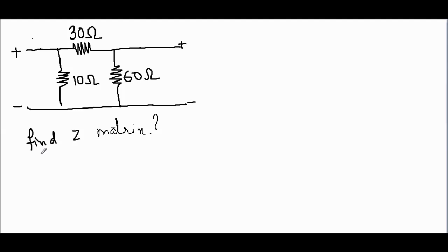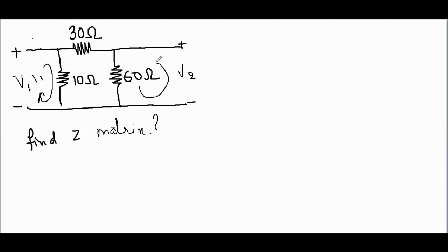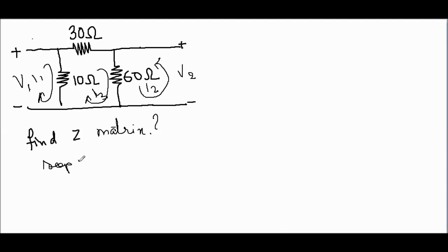What will be the impedance matrix of the given circuit? To find the impedance matrix, we have V1 and V2, and we will apply KVL using mesh analysis. This loop will be I1, this loop will be I2, and this loop will be I3.